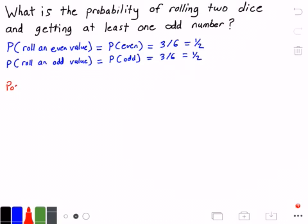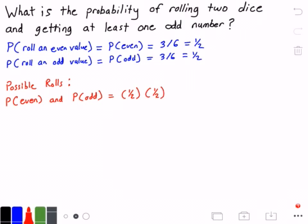So here I put possible rolls. We can get an even number from one die and we can get an odd number or value from the second die. So that would be the probability of rolling an even value and the probability of rolling an odd value, which is equal to 1 half times 1 half. And how do we know that we multiply these two together? Well, because of the word and. And lets us know that we need to multiply. If it was or, then we need to add these probabilities. And so if we multiply a half times a half, we get 1 fourth.